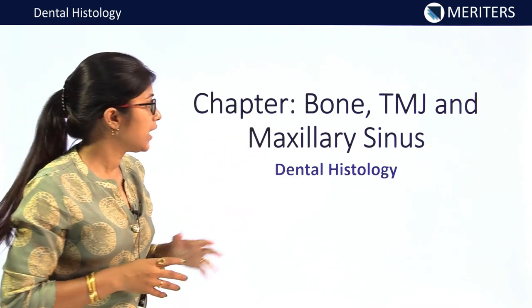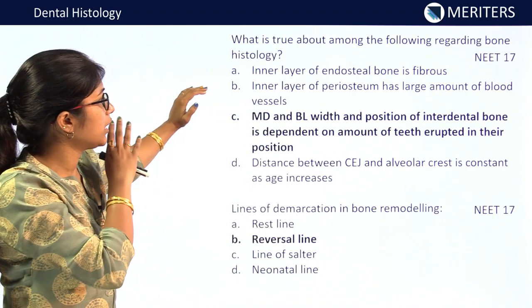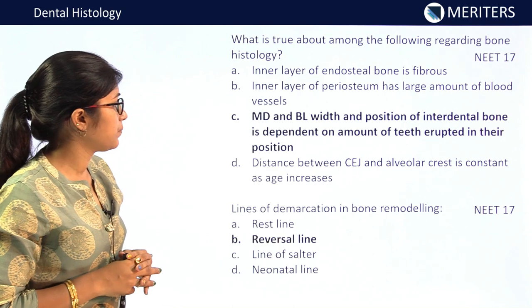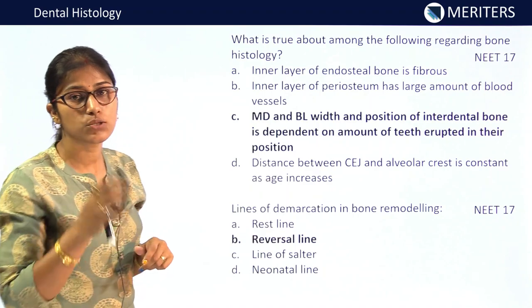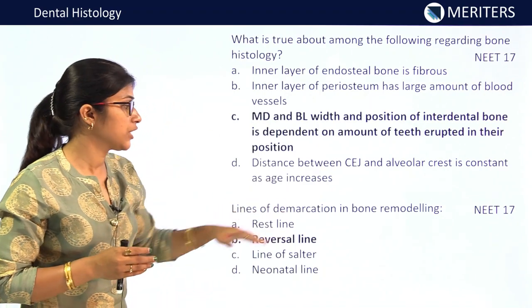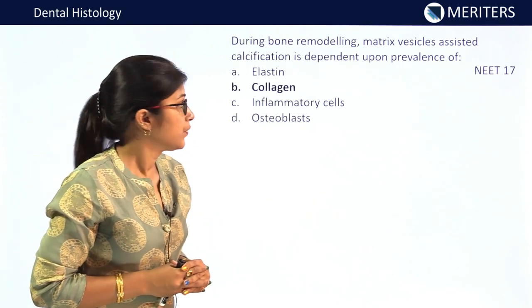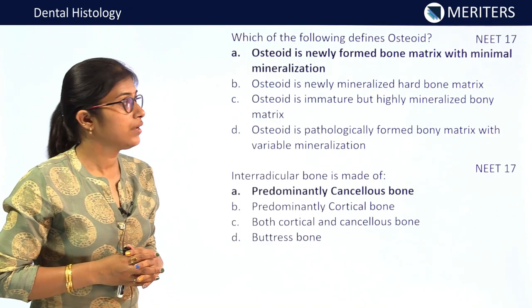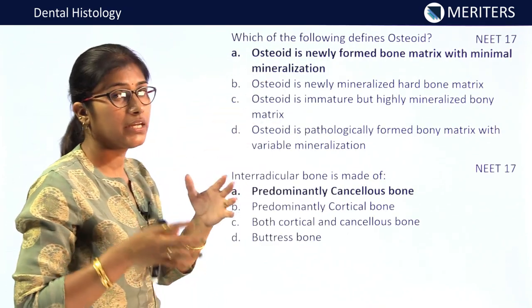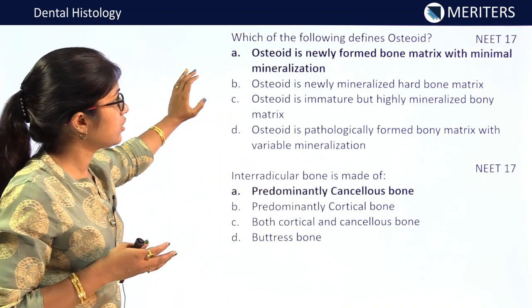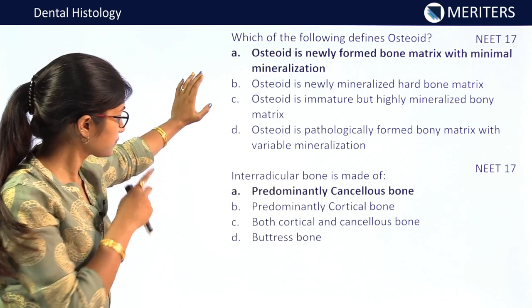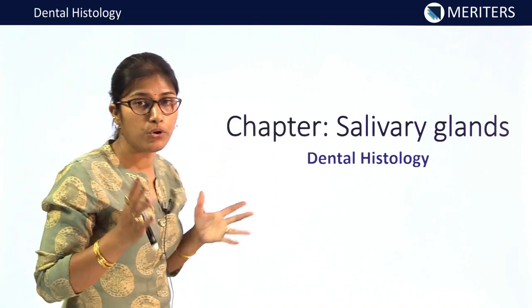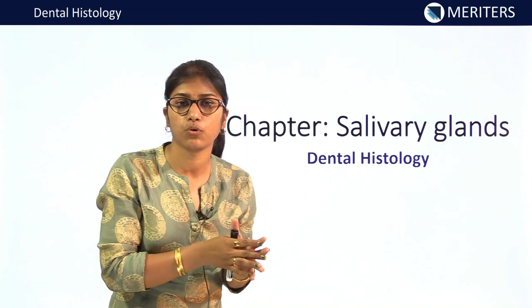Next chapter is bone, TMJ and maxillary sinus. Mesiodistal and buccolingual weight and position of interdental bone is dependent on the teeth erupted and their position — true about bone histology — NEET 2017. Lines of demarcation in bone remodeling are reversal lines — NEET 2017. During bone remodeling, matrix or calcification is dependent on prevalence of collagen — NEET 2017. Osteoid is the newly formed bone matrix with minimal mineralization — NEET 2017. Interradicular bone is made up of predominantly cancellous bone — NEET 2017.